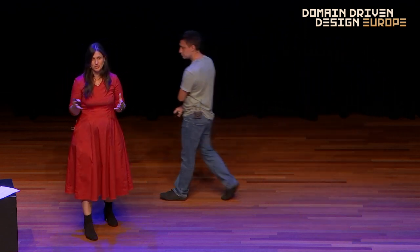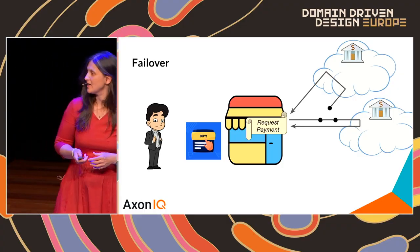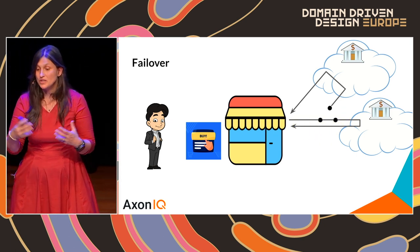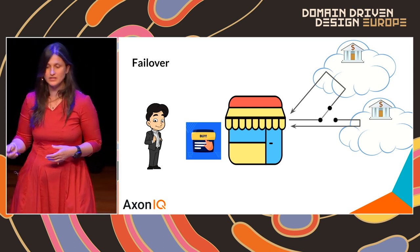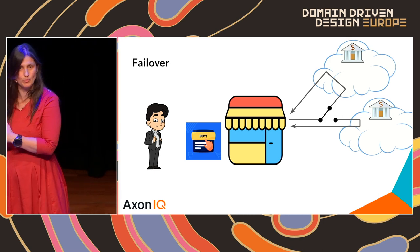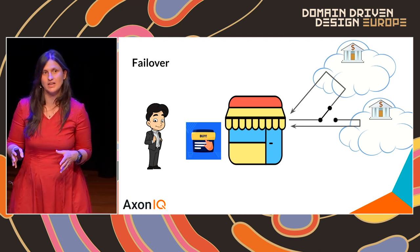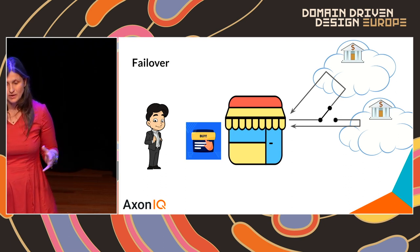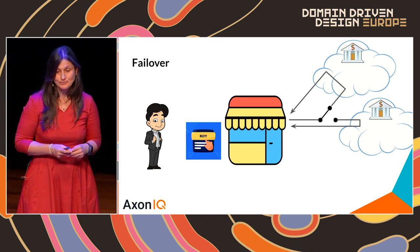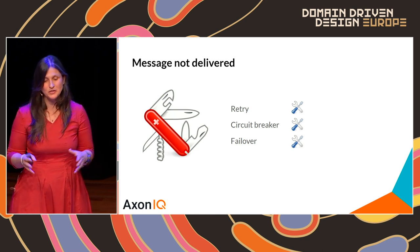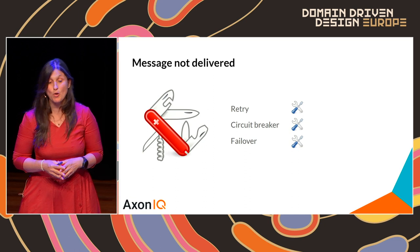Another solution, and the reason Sara doesn't like circuit breakers, is the failover mechanism. When one component is unable to handle its duties, we redirect all messages addressed to it to another instance, which can be spun up on the fly or already available as a replica. This is the third technical solution for the message-not-delivered problem.